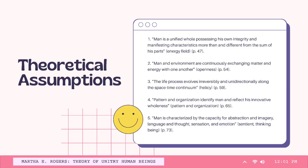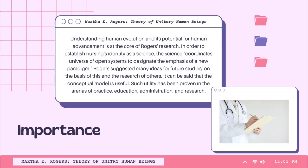Presented here on the screen are the theoretical assumptions made by Rogers in line with the theory of unitary human beings. Understanding human evolution and its potential for human advancement is at the core of Rogers' research. In order to establish nursing identity as a science, the science coordinates a universe of open systems and designates the emphasis of a new paradigm. Rogers suggests many ideas for future studies on the basis of this study and research of others. It can be said that the conceptual model is useful, and such utility has been proven in arenas of practice, education, administration, and research.